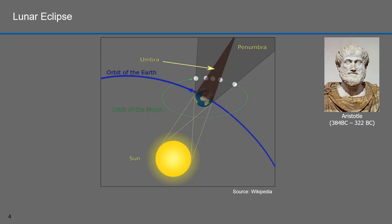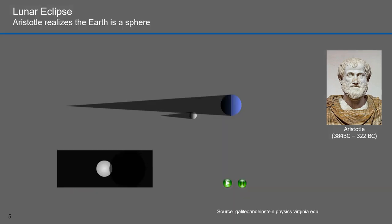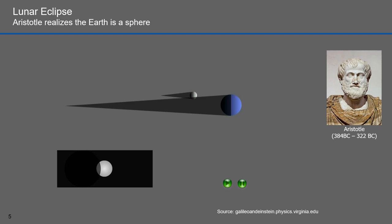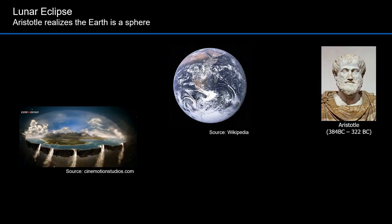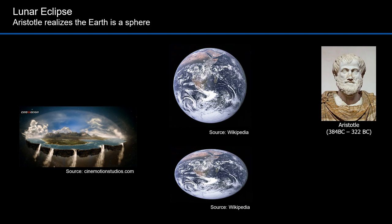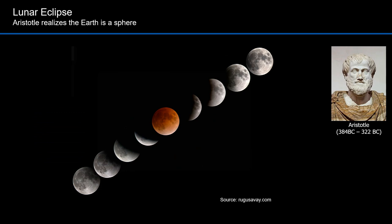Aristotle proved that the Earth is a sphere by observing a lunar eclipse. A lunar eclipse is when the moon passes behind the Earth and passes through the shadow of the Earth. It starts and ends with a full moon, and during the eclipse, it results in a red moon. The shadow cast is circular, and that led Aristotle to believe the Earth was spherical. If the Earth were flat, you'd get a circular shadow some of the time, but at other times the flat Earth would be tilted and the shadow would look elliptical. The Earth's shadow was circular for every lunar eclipse Aristotle observed.